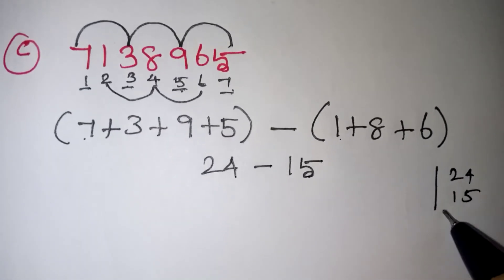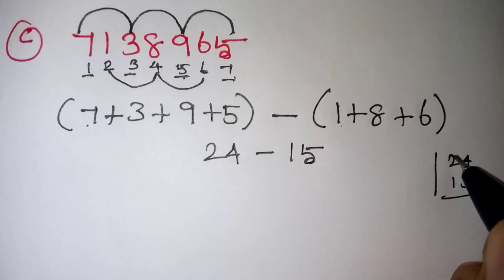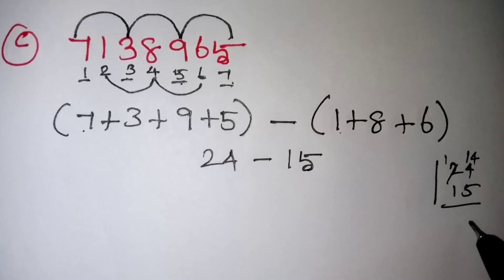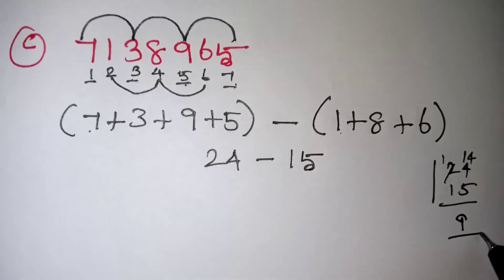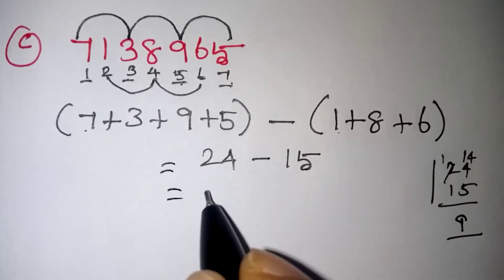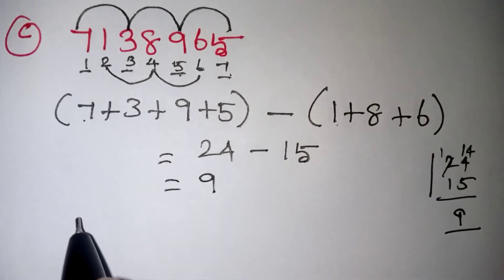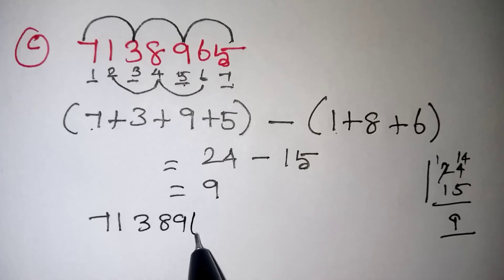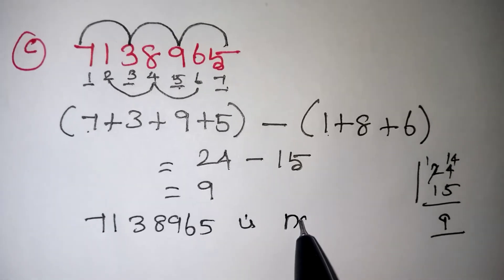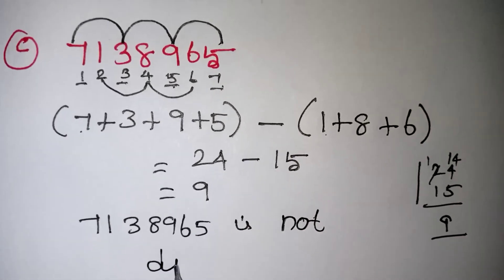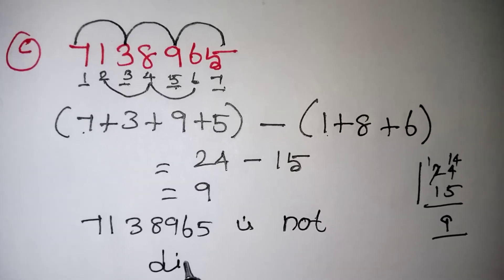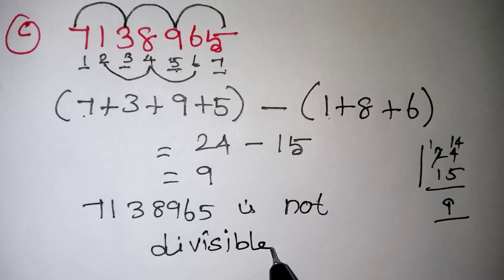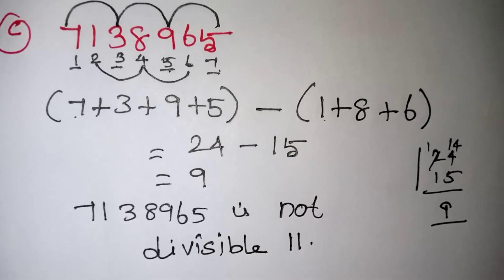Subtract: from 4, 5 is not possible, so get a borrow — 14 minus 5 gives 9. So here we are getting 9. Since 9 is not 0 or a multiple of 11, this number will not come in the 11 times table. Therefore, 17138965 is not divisible by 11.